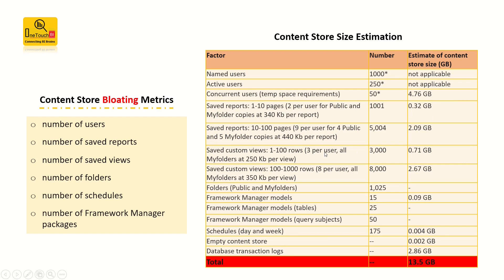For saved reports of 10 to 100 pages, the storage grows to 2.09 GB for 5,004 copies. For custom views, 1 to 100 rows at 3,000 copies is 0.71 GB. When the same custom view grows to 100 to 1,000 rows at 8,000 copies, it becomes 2.67 GB — that's roughly four times the growth.